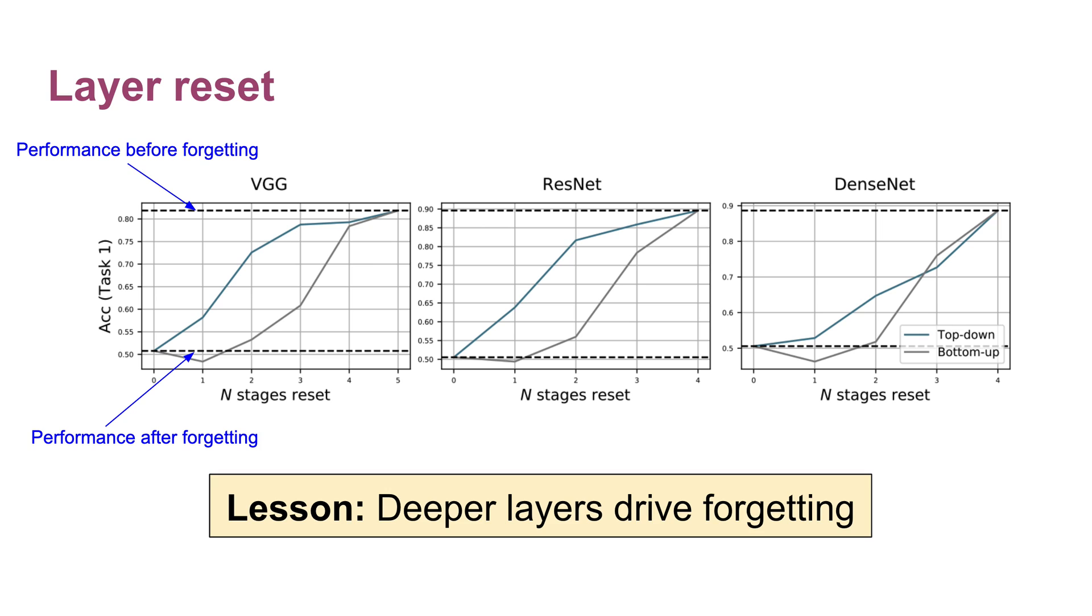One from the deep end first, and the other from the input side first. Comparing these two orders shows that we get much better performance when resetting layers from the deep end. Again, showing this lesson that deeper layers are the ones driving forgetting. And this lesson is in fact the main takeaway from our study of internal representations.